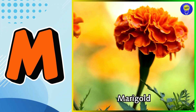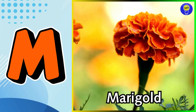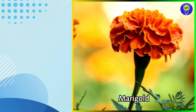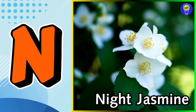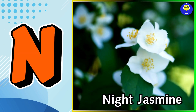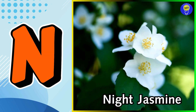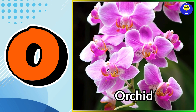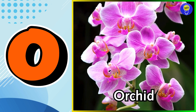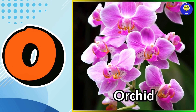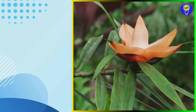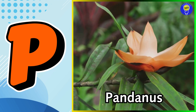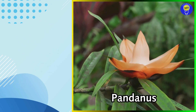M is for marigold flower. N is for night jasmine flower. O is for orchid flower. P is for pandanus flower.